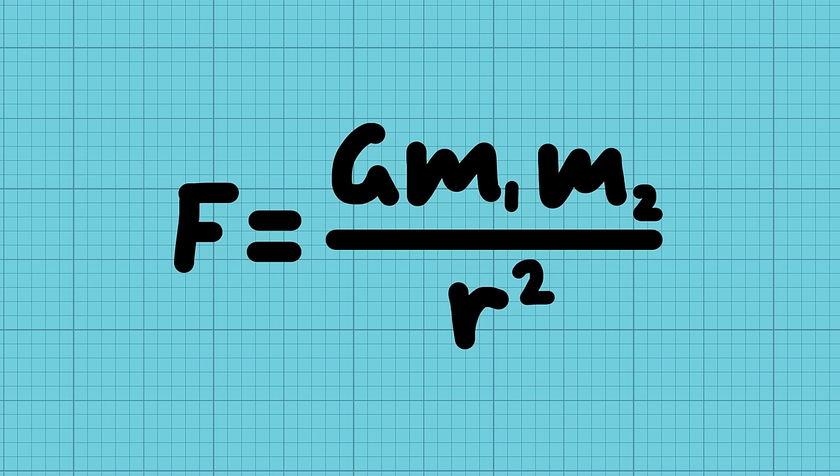Let's look at an example of an equation and how I'd go about reading it. This is Newton's law of universal gravitation which looks at the force of gravity between two masses. The first thing you do is work out what all of the letters mean.